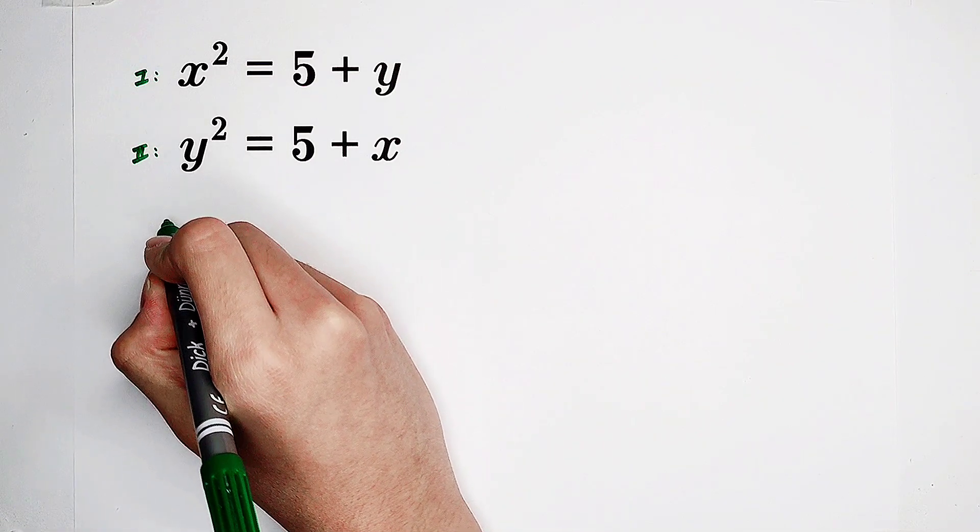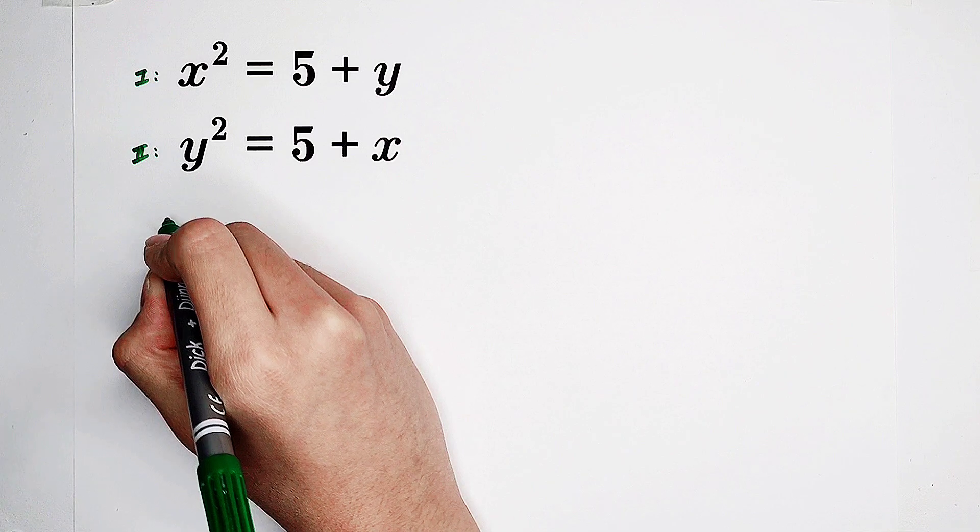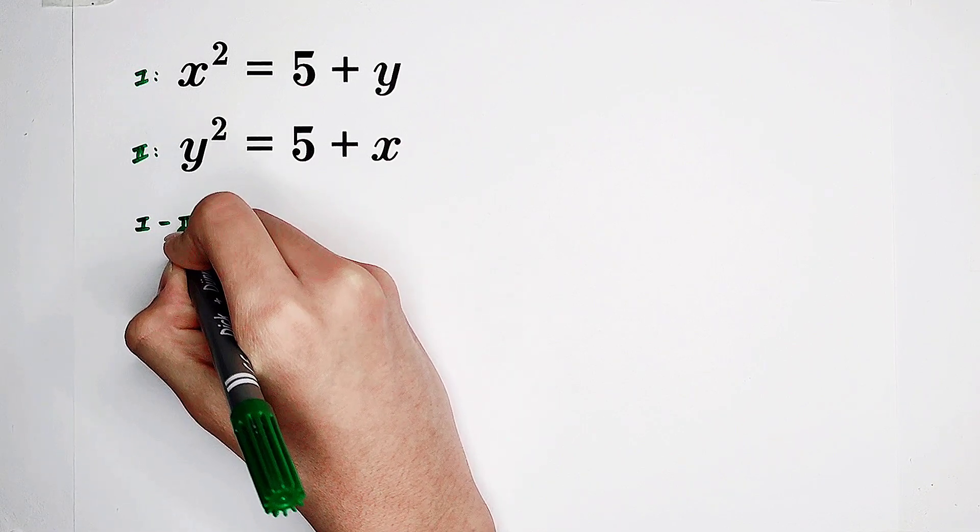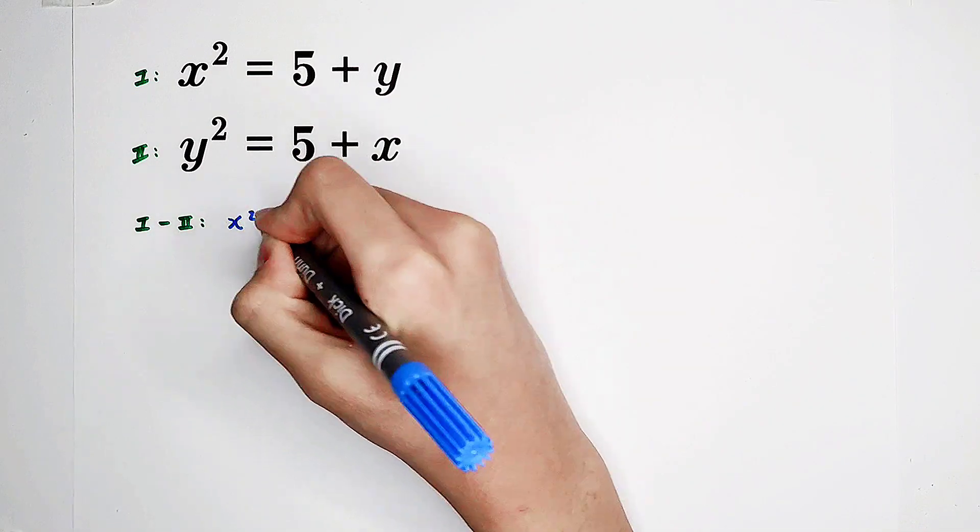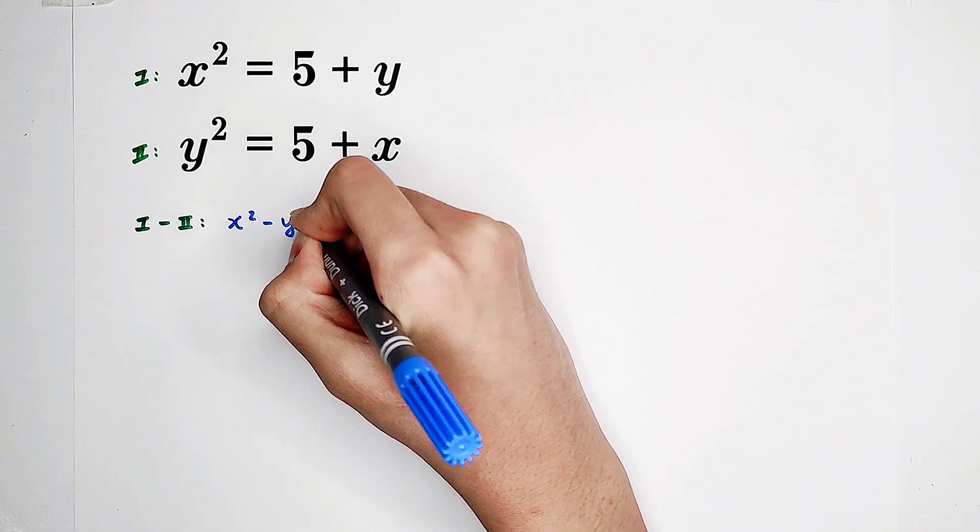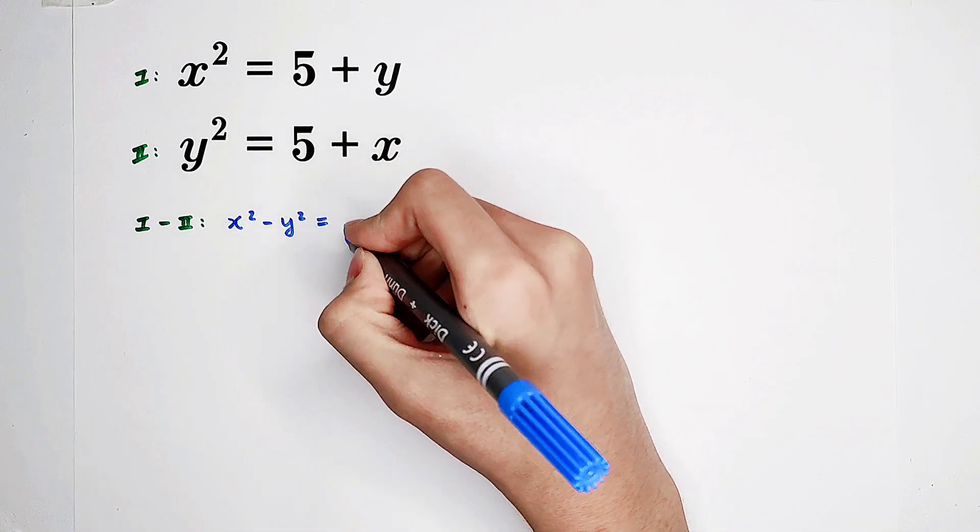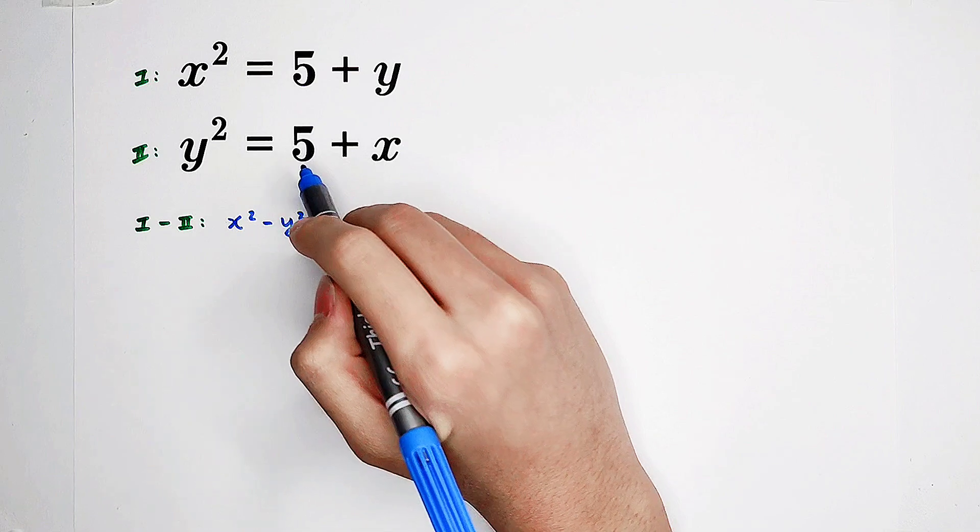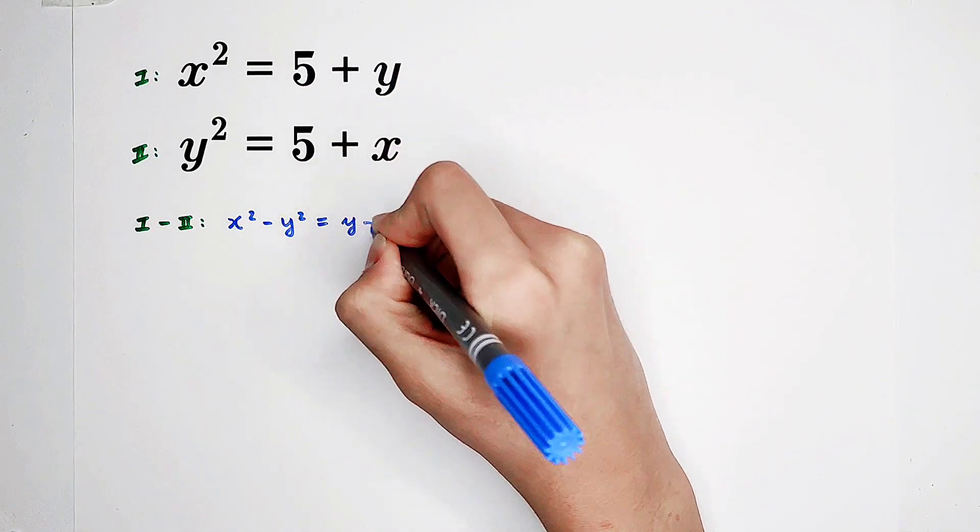So now, I like to subtract the second one from the first one. Now we can get x squared minus y squared is the left-hand side, and the right-hand side is 5 plus y minus 5 minus x. So it is y minus x.